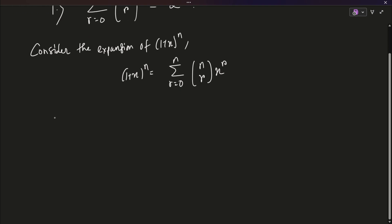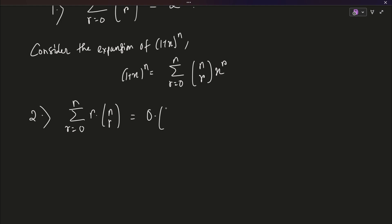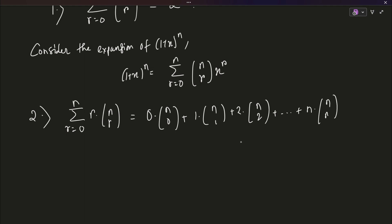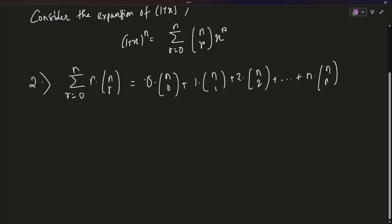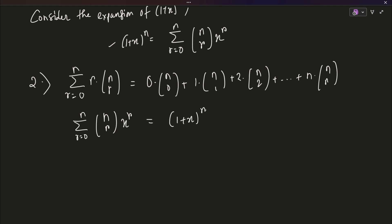Let us see a few different kinds of summations including ones you already know. Consider number 2: the summation r=0 to n of r·nCr. In expanded notation this means 0·nC0 + 1·nC1 + 2·nC2 all the way up to n·nCn. You might already know this equals n·2^(n−1). There is a way to prove it by absorbing r inside the binomial coefficient, but consider x as a variable and start with the following identity: the sum r=0 to n of nCr · x^r = (1+x)^n, where x is a variable.